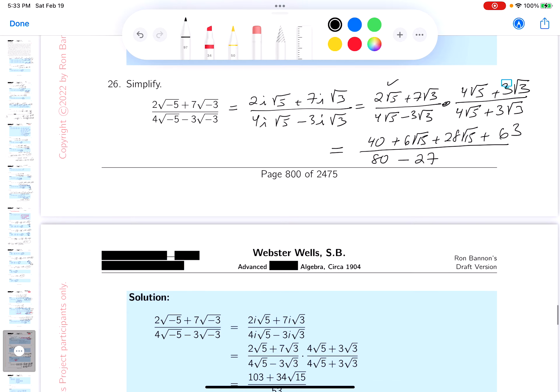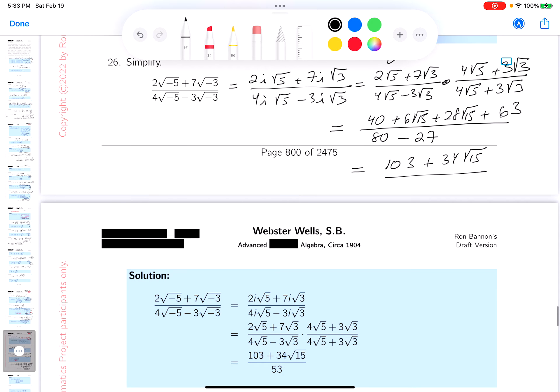And again, I want to do the arithmetic. And what do you get? We get 103 plus 34 root 15. On the bottom, you get 80 minus 27, which is going to be 53. And there's not much I can do about that. So that's my answer.